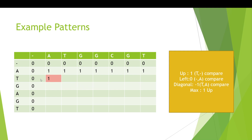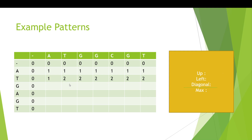Looking at the next row: for the first cell, coming from above gives a one, from the left gives zero, and from the diagonal you get zero minus one. So this value is copied down. For the next cell, T versus T from the diagonal gives a score of two (one plus one); from the left you get one; from the top you get one. The max is two. You continue filling this row the same way, and for the last cell in this row T and T from the diagonal again gives two.